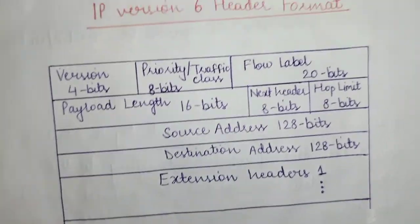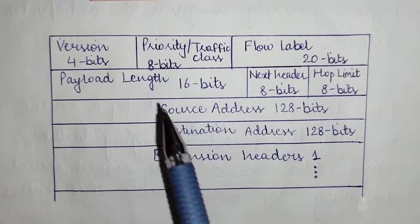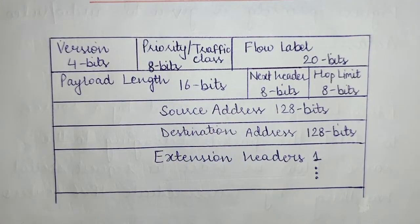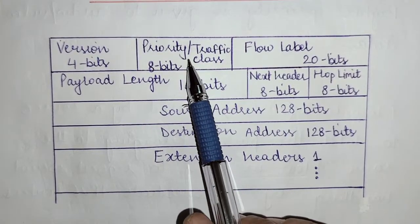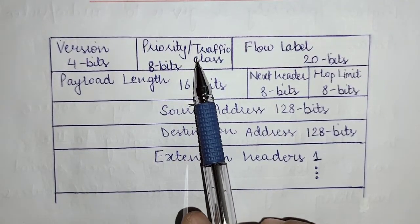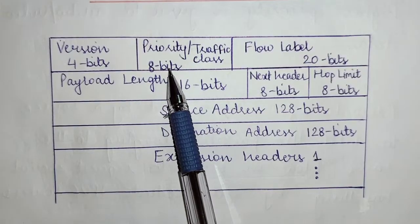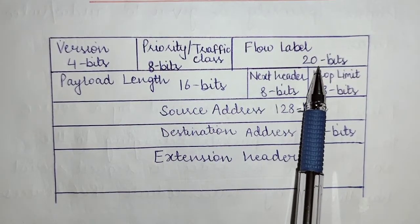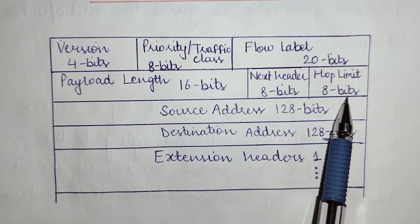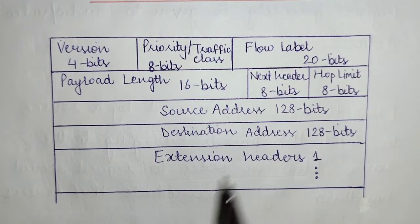Now let's look at the IPv6 header format. The fields in the IPv6 header are: the version field (4 bits), the priority or traffic class field (8 bits) — which replaces the type of service field from IPv4 — the flow label field (20 bits), payload length field (16 bits), next header field (8 bits), hop limit field (8 bits), source address (128 bits), destination address (128 bits), and extension headers.